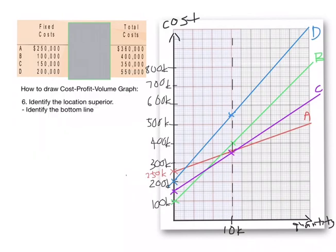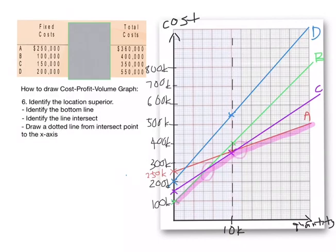Number six, identify the location superior. First, identify the bottom line. 2. Identify the line intersect, 1, 2, 2 intersect. Draw a dotted line from intersect point to the X axis, 1st point, 2nd point.